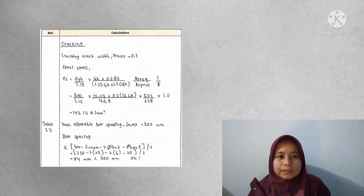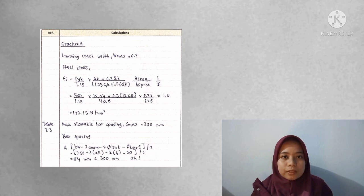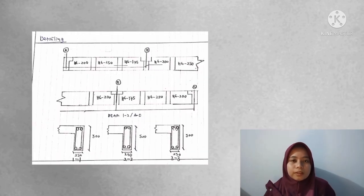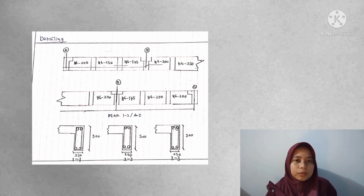Next is cracking. Bar spacing is 84 mm, which is less than 300 mm. Finally, detailing — this is our detailing for the BM brown flow beam.